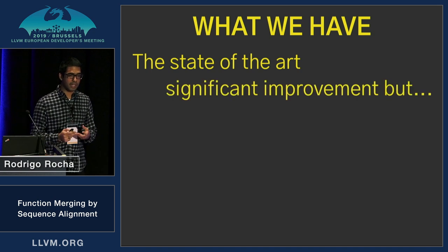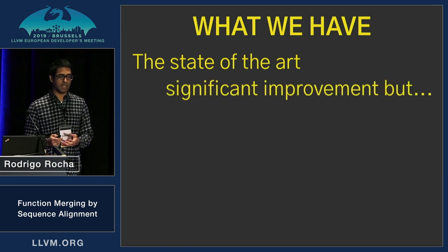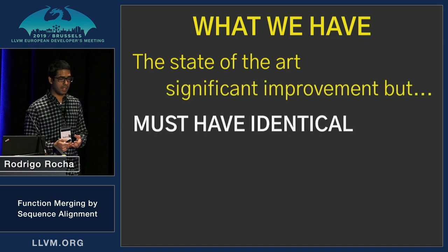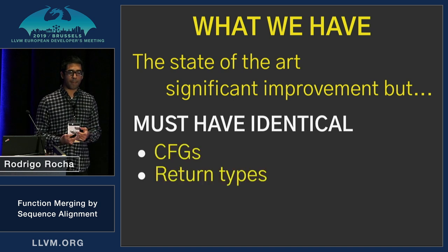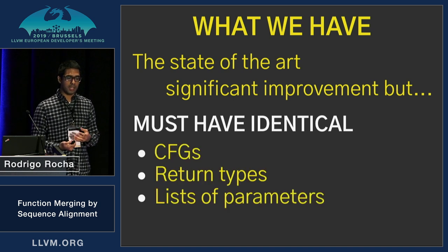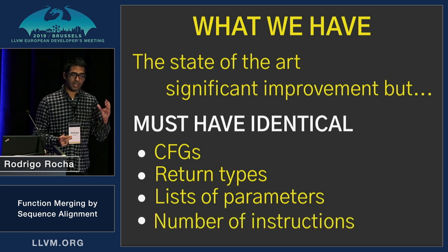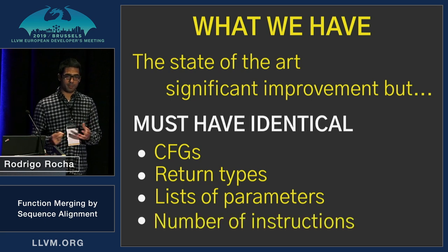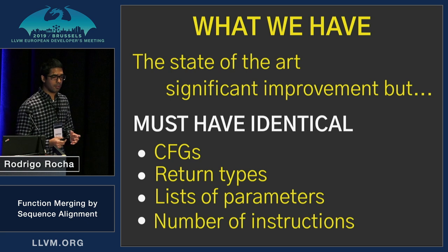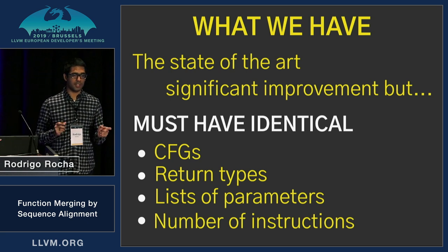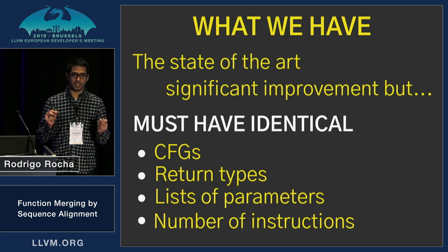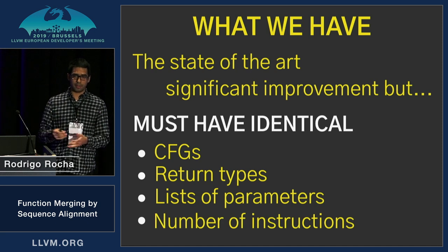For example, state-of-the-art techniques have many restrictions such as they can only handle identical CFGs, identical return types, identical list of parameters, and also the number of instructions per basic block. So in summary, they can only handle differences in corresponding instructions in an otherwise identical CFG.